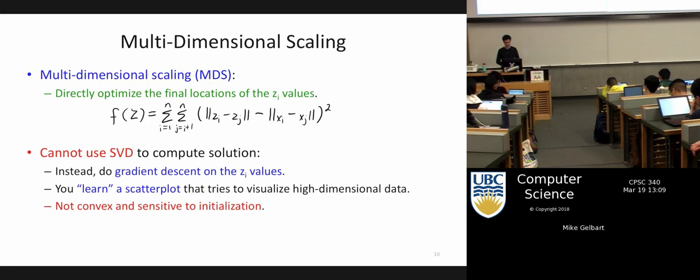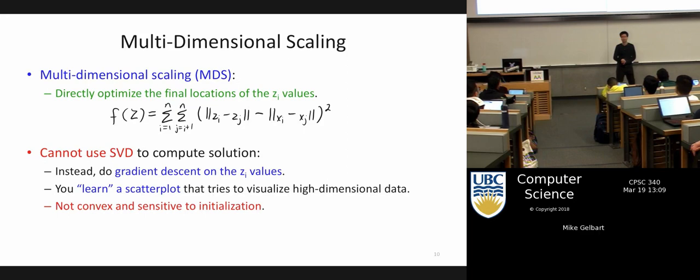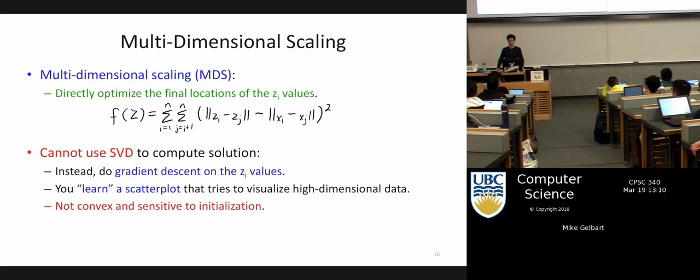We are definitely outside of the land of SVD here — we're not doing PCA. But we can use our optimization methods, like gradient descent, to solve this problem. It does have local minima that are not optimal, so the result is sensitive to initialization, but we can get something out of this with gradient descent.